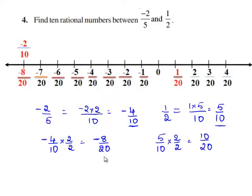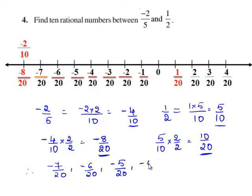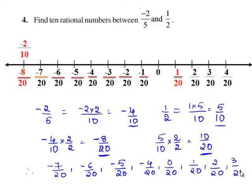Now, we shall write 10 rational numbers between minus 8 by 20 and 10 by 20. They are: minus 7 by 20, minus 6 by 20, minus 5 by 20, minus 4 by 20, 0 by 20, 1 by 20, 2 by 20, 3 by 20, 4 by 20, and 5 by 20.